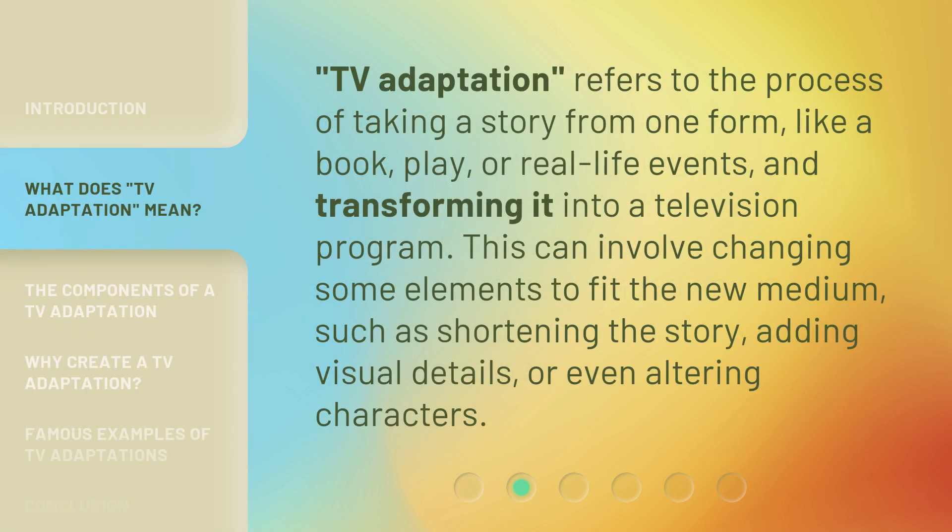TV adaptation refers to the process of taking a story from one form, like a book, play, or real-life events, and transforming it into a television program. This can involve changing some elements to fit the new medium, such as shortening the story, adding visual details, or even altering characters.